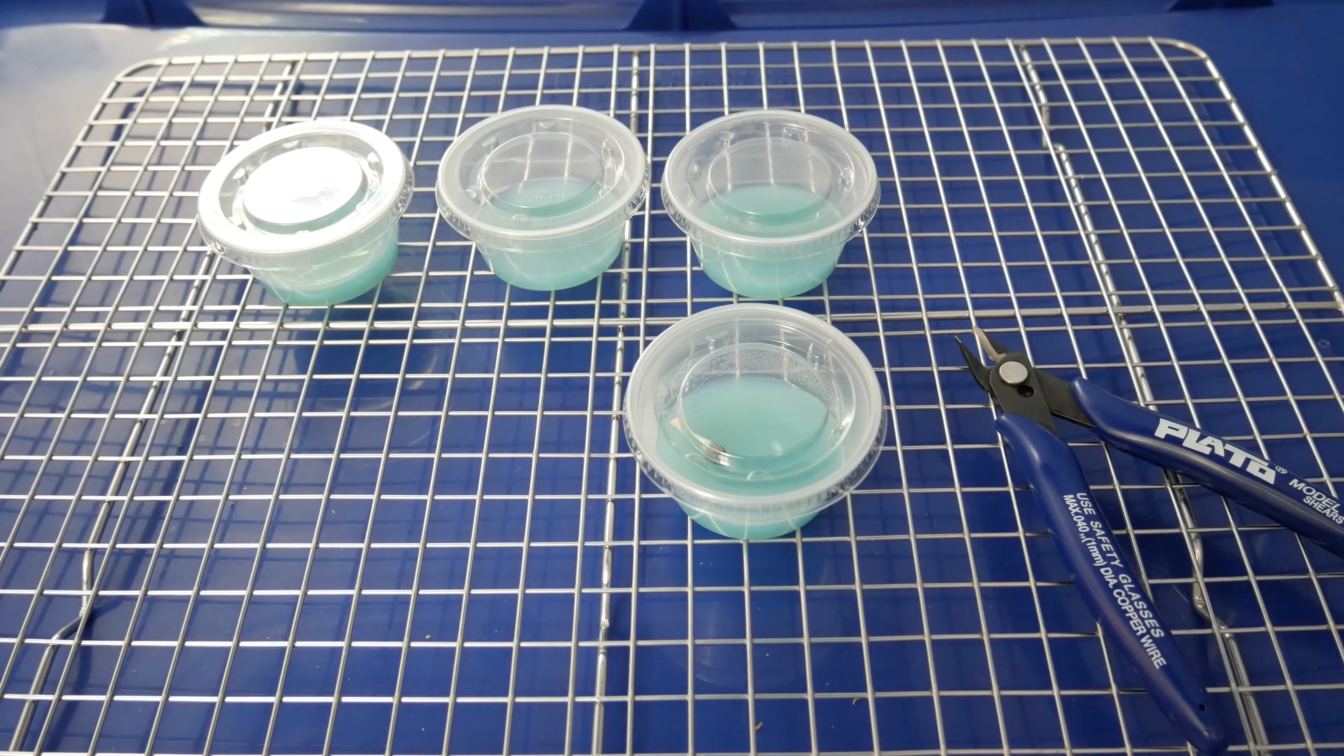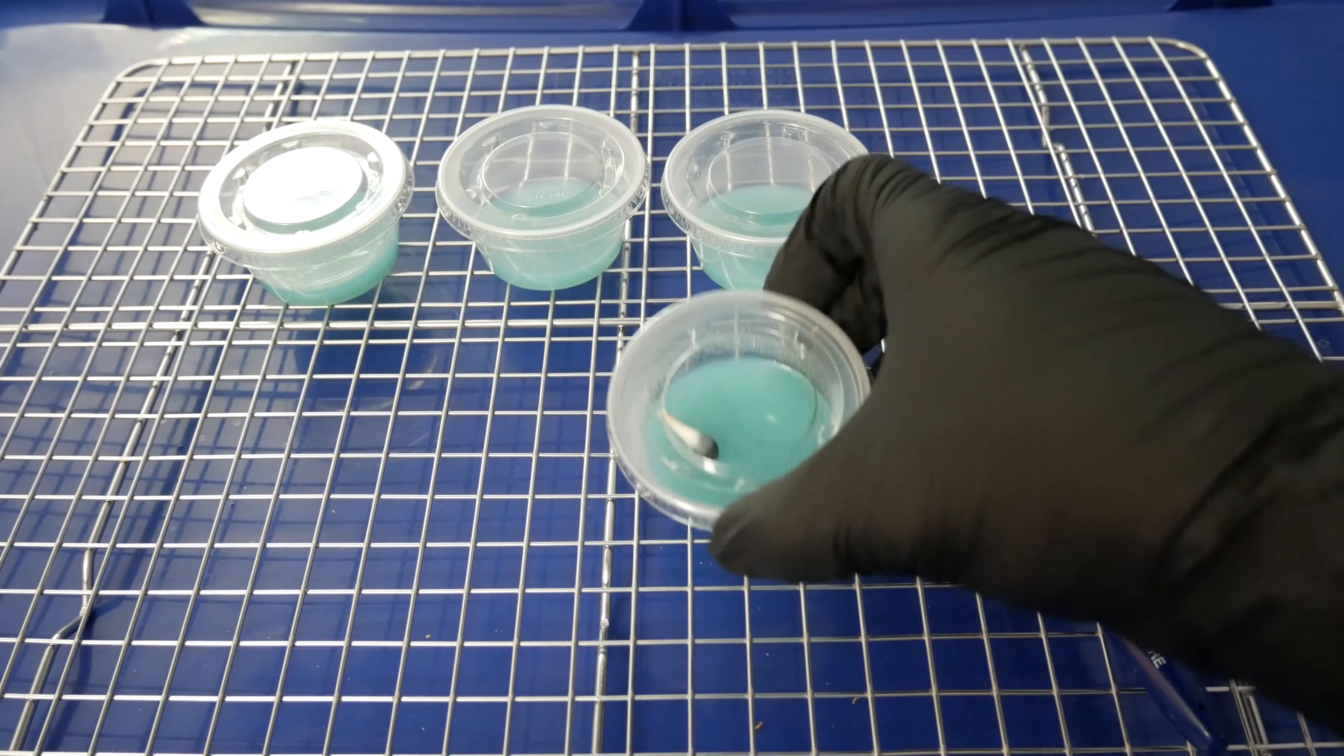After you're done inoculating your agar dishes, we'll go ahead and leave these out to incubate at room temperature. So you want to be somewhere between 70 to 80 degrees Fahrenheit or 21 to 28 degrees Celsius. We'll check back to these in about a week or two and you should see some mycelium start to germinate from our spores.